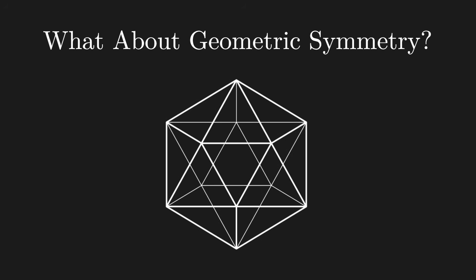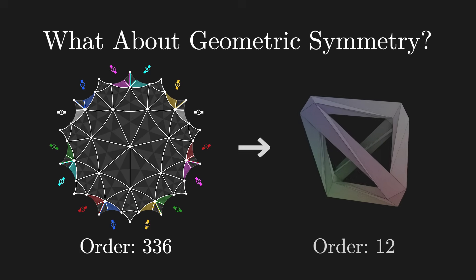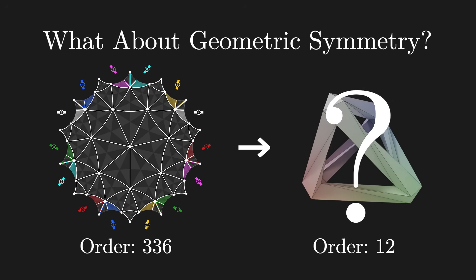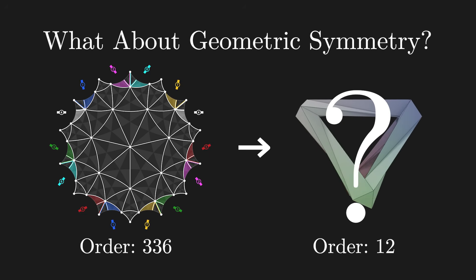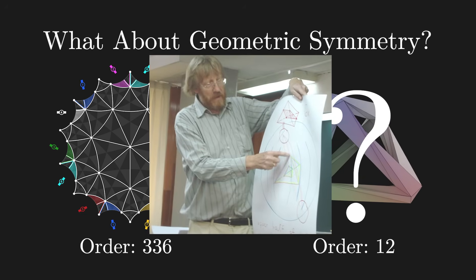You might also want to consider which geometric symmetries can be realized in the embeddings. Since a regular map is so symmetric, it typically has hundreds of symmetries, but we can't cram all of them into the 3D space of the polyhedron. But then, which symmetries can be embedded for a given regular map? This is where my journey started with Dr. Bukowski.